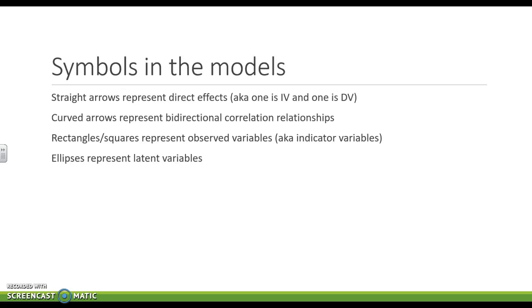Speaking of symbols in the model, go ahead and write this stuff down and just memorize it. And we'll come back to it as we continue. But straight arrows represent direct effects. So one is leading to the other. Curved arrows represent correlational relationships. And if you think back to correlation, there is no established IV or DV. They're bidirectional. They're equal.